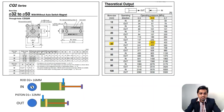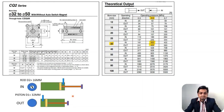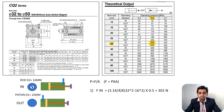For the 'in' direction, pressure acts on the rod side, causing the rod to retract. The force is calculated as: F = pressure × effective area. Area is key here — on the rod side, the rod cross-section is subtracted from the piston area.